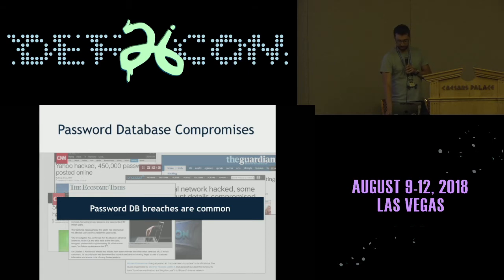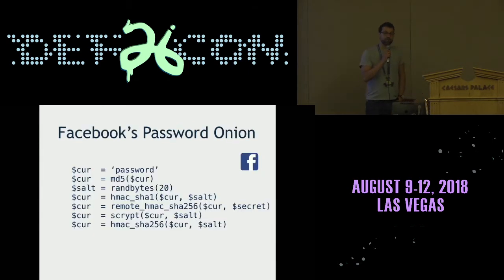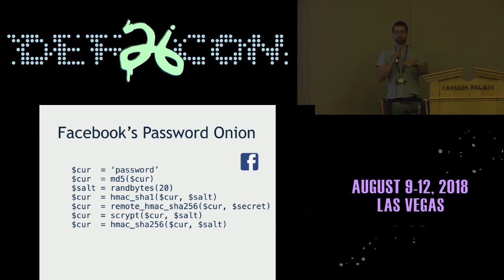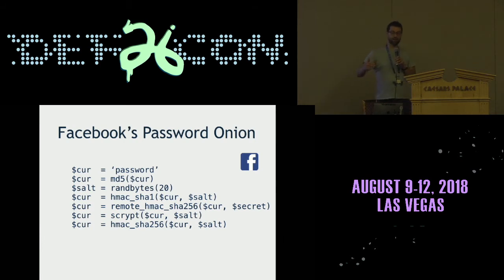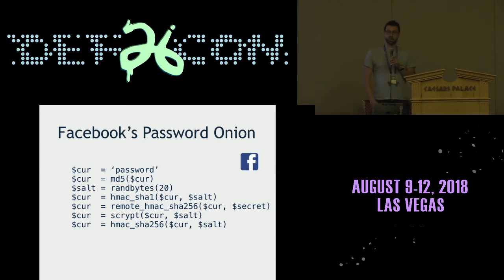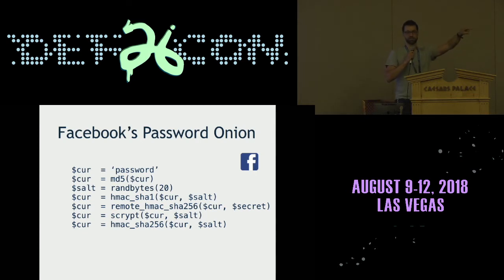In January 2015, Facebook presented this slide at the Real World Crypto Conference in London. This slide is pseudo code of how Facebook processes a new or changed password when you log in. So this is what Facebook does: they take your password, run it through a deprecated hash function called MD5, choose a random 20-byte salt, take the output of MD5 plus the salt, run it through a deprecated hash function called HMAC-SHA1, then take that result and send it to a remote machine.